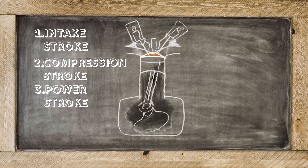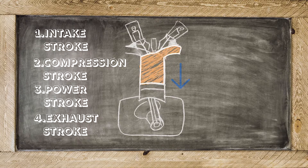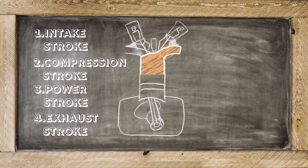On the power stroke, just before the piston reaches the top, the spark plug ignites the fuel and oxygen mixture, which then forces the piston back down. On the exhaust stroke, once it's at the bottom, the exhaust valve opens and the exhaust exits the cylinder.